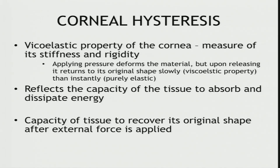The viscoelastic property of the cornea is a measure of its stiffness and rigidity. What it translates to is that any pressure causes a deformation of the material, but on release of this pressure, it tries to return to its original shape slowly — this is the viscoelastic property. It reflects the capacity of the tissue to absorb and dissipate energy applied, and the capacity to recover to its original shape after the external force is applied is what is actually measured here.